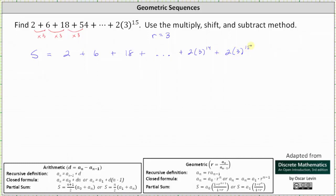The next step is to form a second equation by multiplying both sides of this equation by the value of r, or in this case 3. And when we do this, we also want to shift the terms on the right side of the equation to the right. So first on the left, 3 times s is 3s equals 3 times 2 is 6.